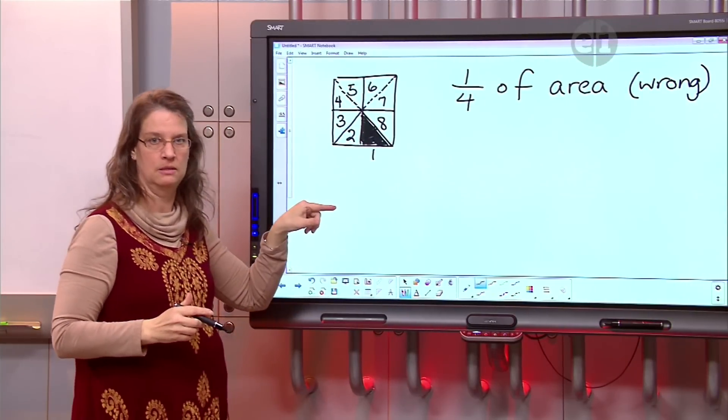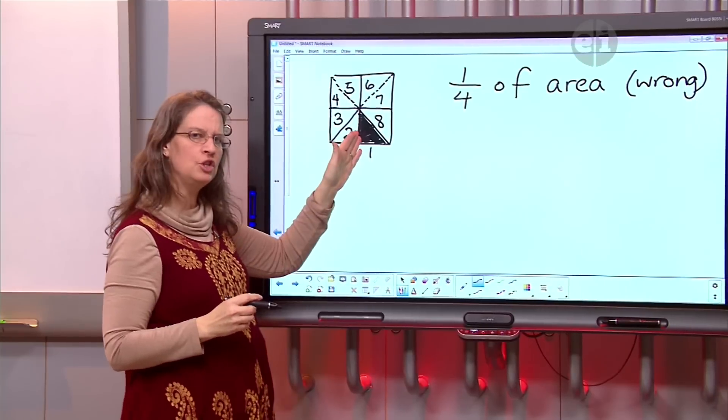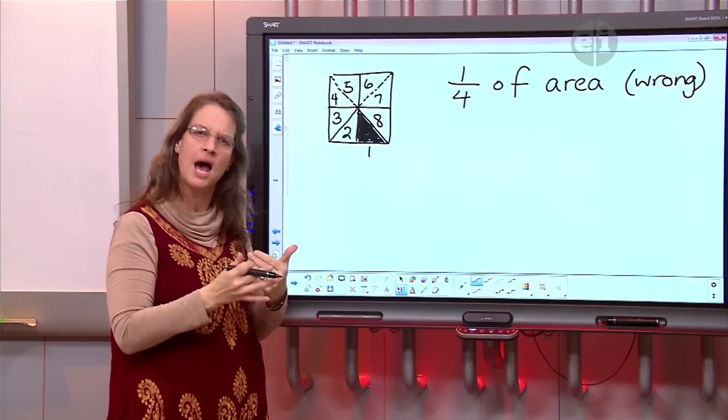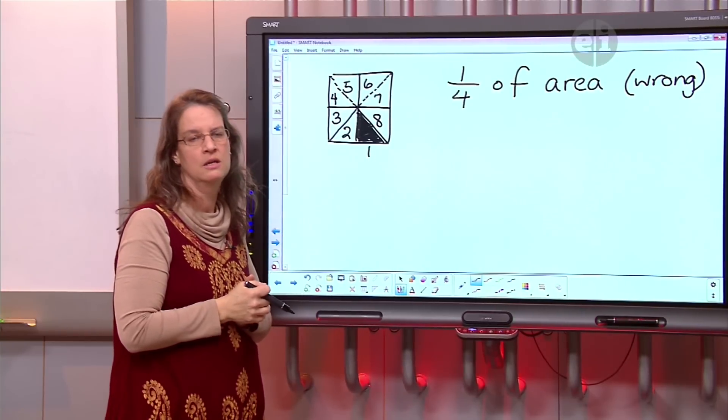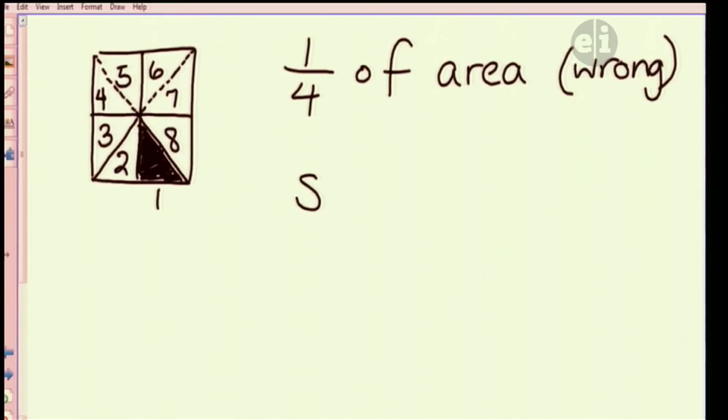So now I have one triangle shaded, but I have eight triangles total. So how much did I really shade in? One eighth. One eighth. So our shaded is equal to one eighth.